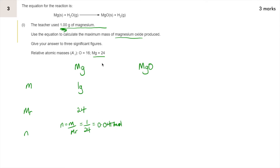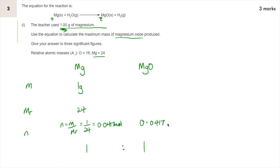Now we need to look at the mole ratio. In this equation there is no number in front of magnesium and there is no number in front of magnesium oxide, so it's the same as the previous two questions. Every one mole of magnesium will produce one mole of magnesium oxide. Whatever number of moles of magnesium you have, you will make the exact same number of moles of magnesium oxide. So we have 0.0417 moles of magnesium being reacted, so that exact amount of moles can be made of magnesium oxide.